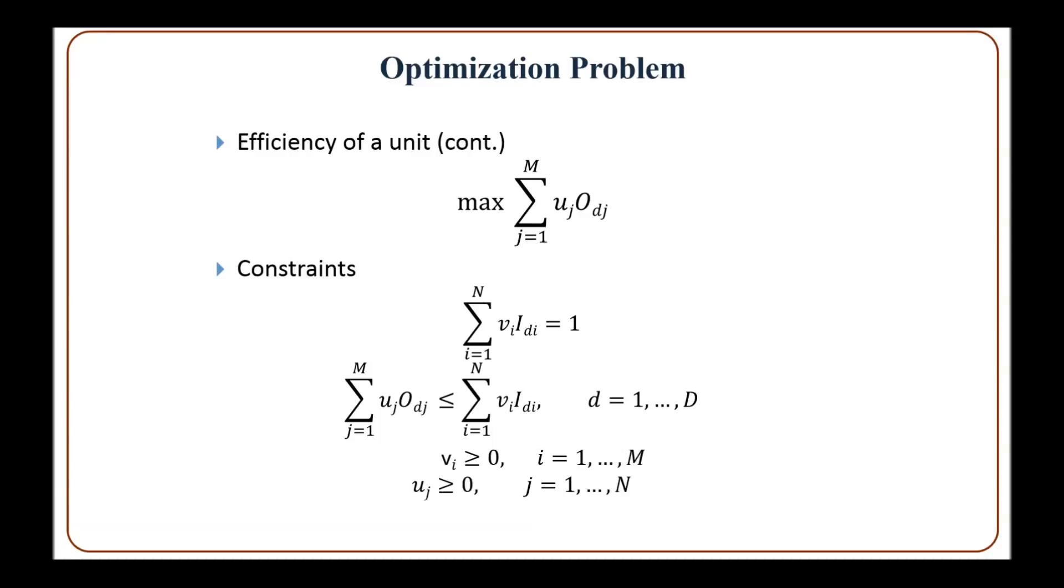The first constraint is the denominator constraint. The second constraint means that the weighted sum of output has to be less than or equal to the weighted sum of the inputs for all the DMUs.